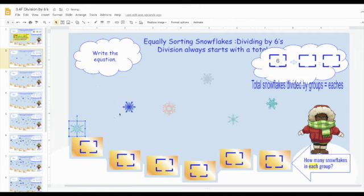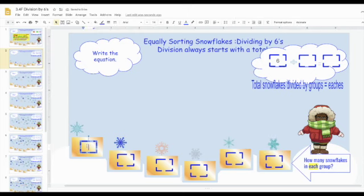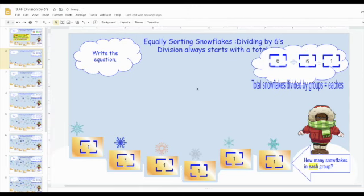Now we're going to move the snowflakes to each of the sorting groups. And how many do I have in each group? I have one snowflake here and one here and one here, one here, double click, double click. So I have one in each group. So I had six groups, six total snowflakes divided by six sorting groups means there's one in each group.